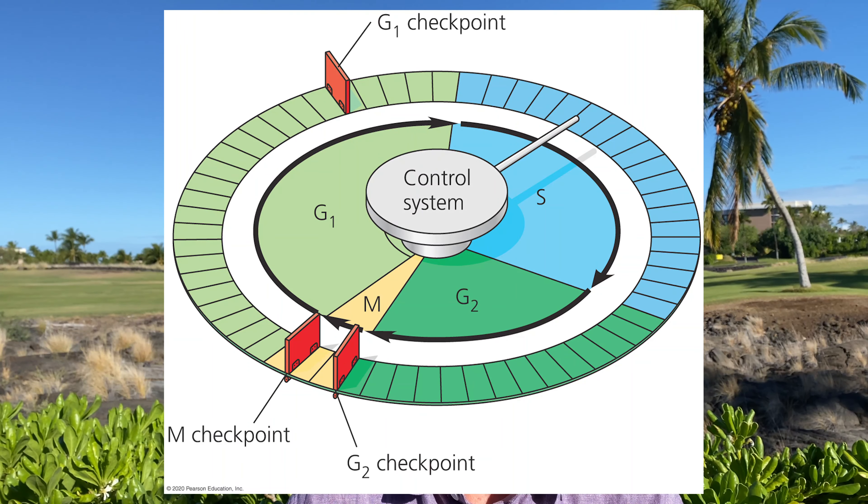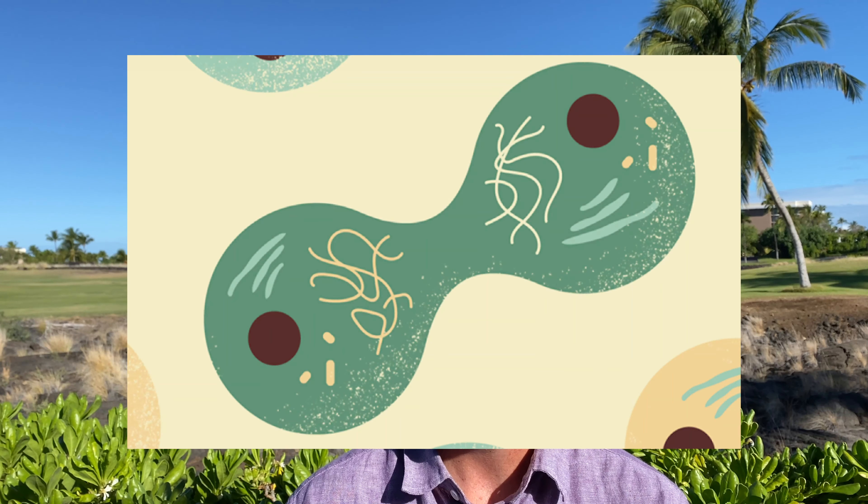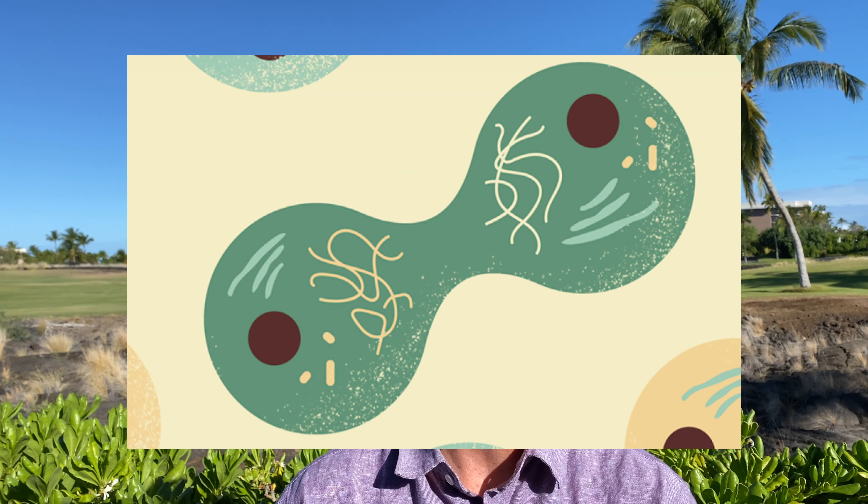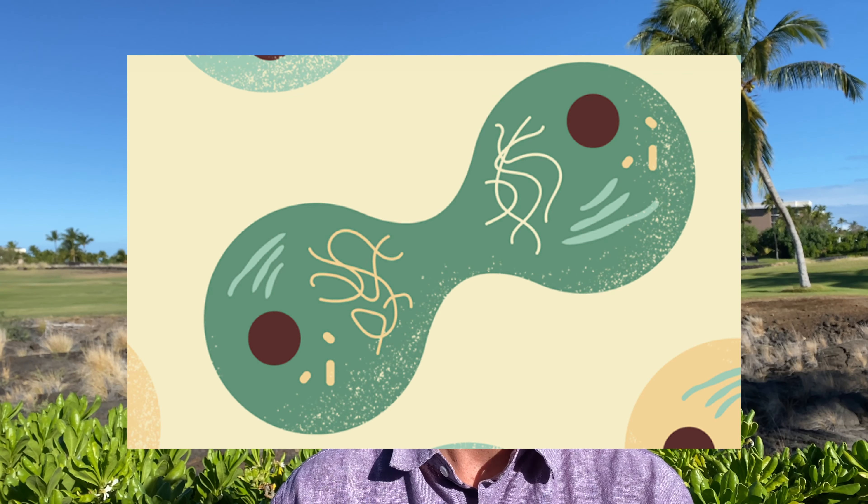Cell division is an integral part of the cell cycle, which is the life of the cell. The division of a parent cell results in two identical daughter cells. The key event of cell division is the proper distribution of the genetic material. It is absolutely essential that the daughter cells each receive the identical DNA from the parent cell.